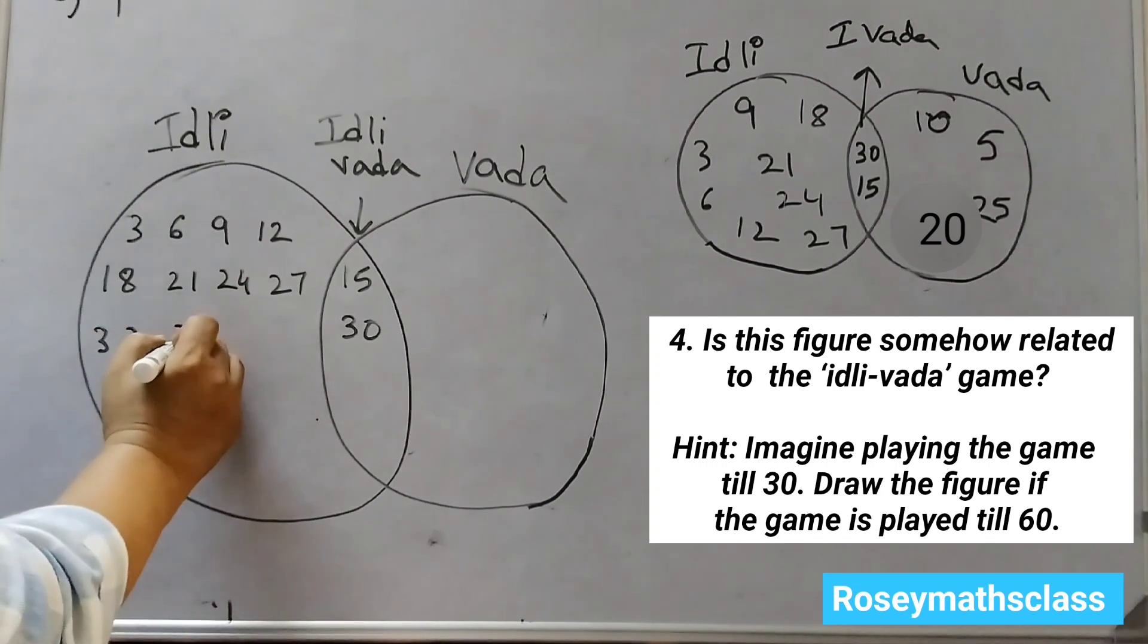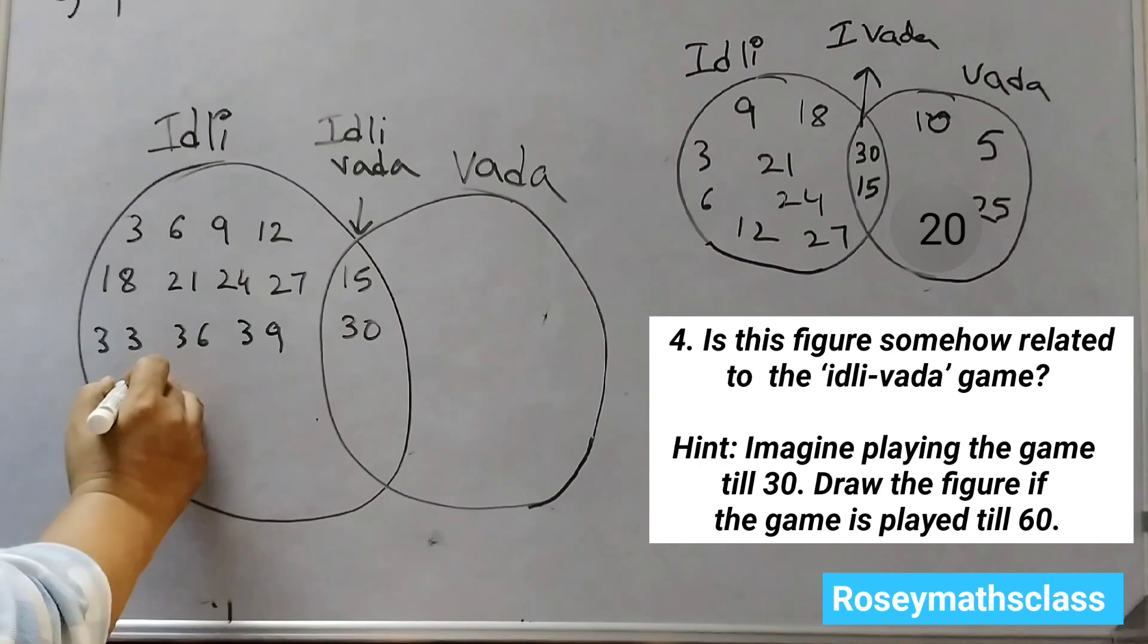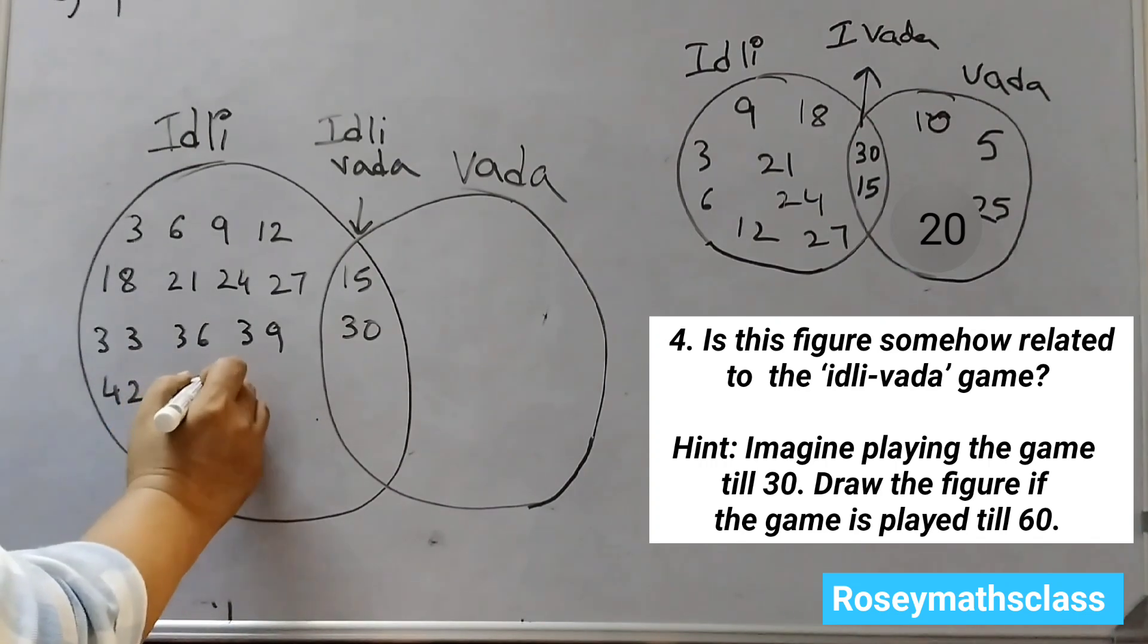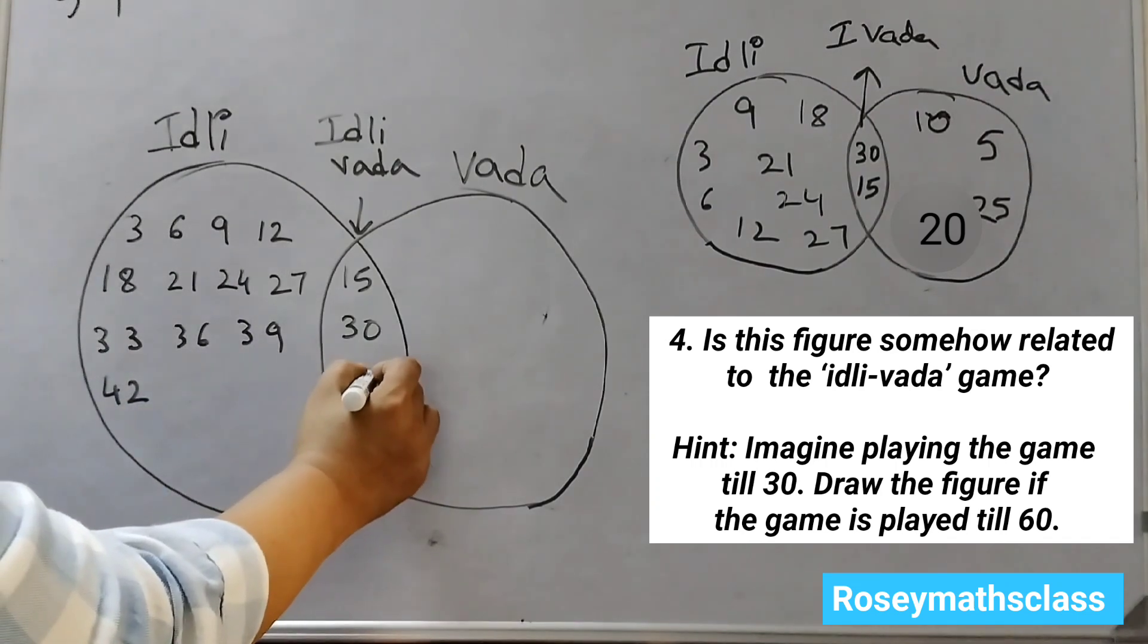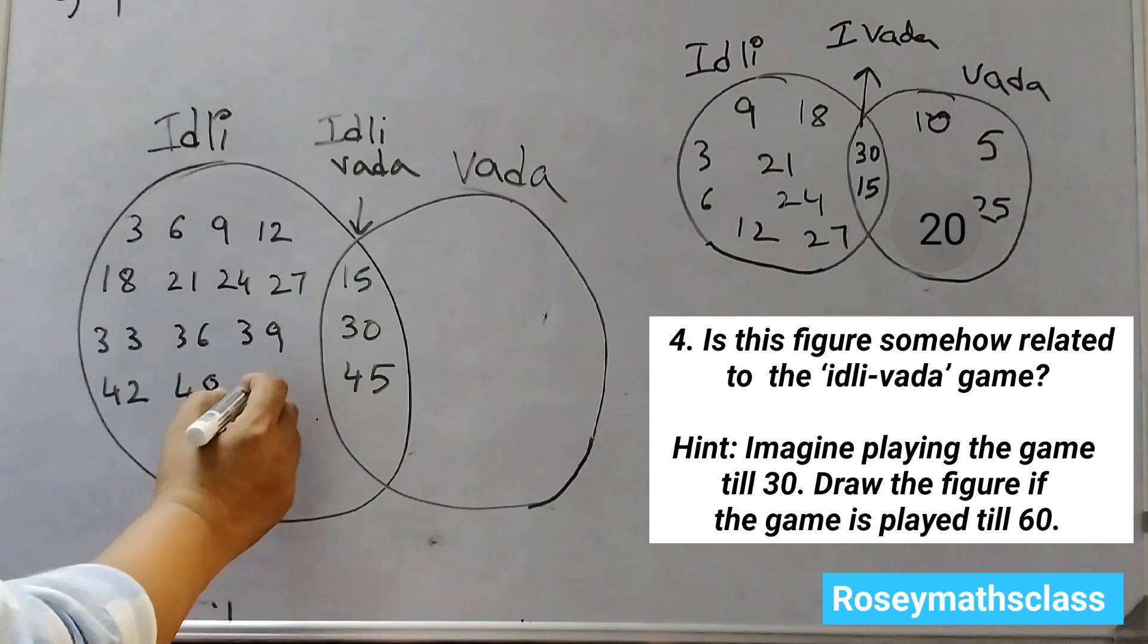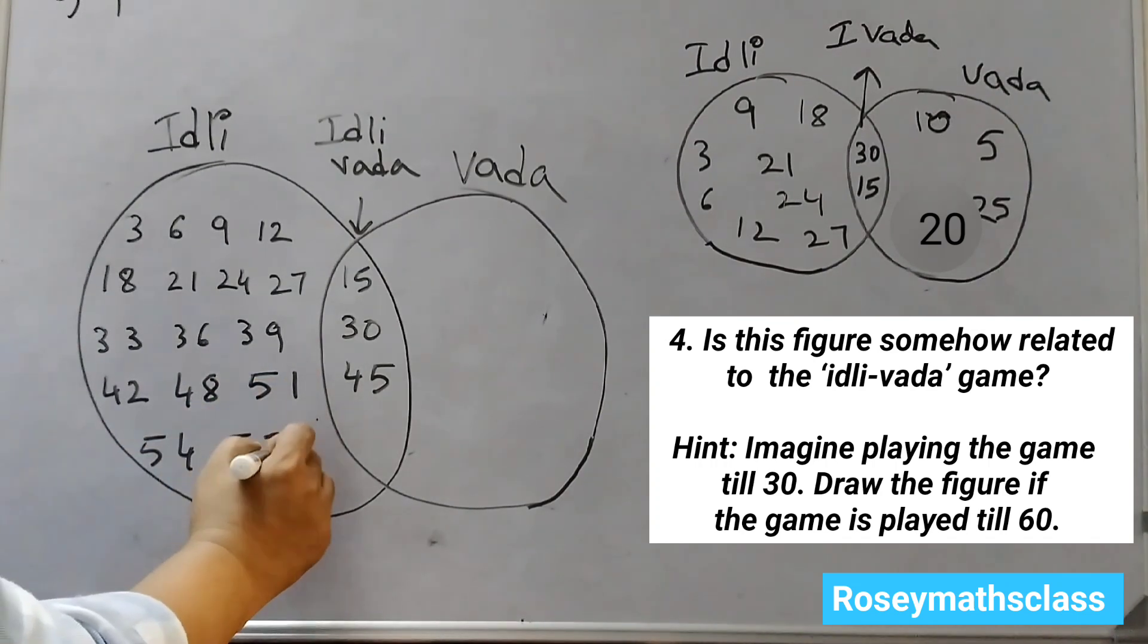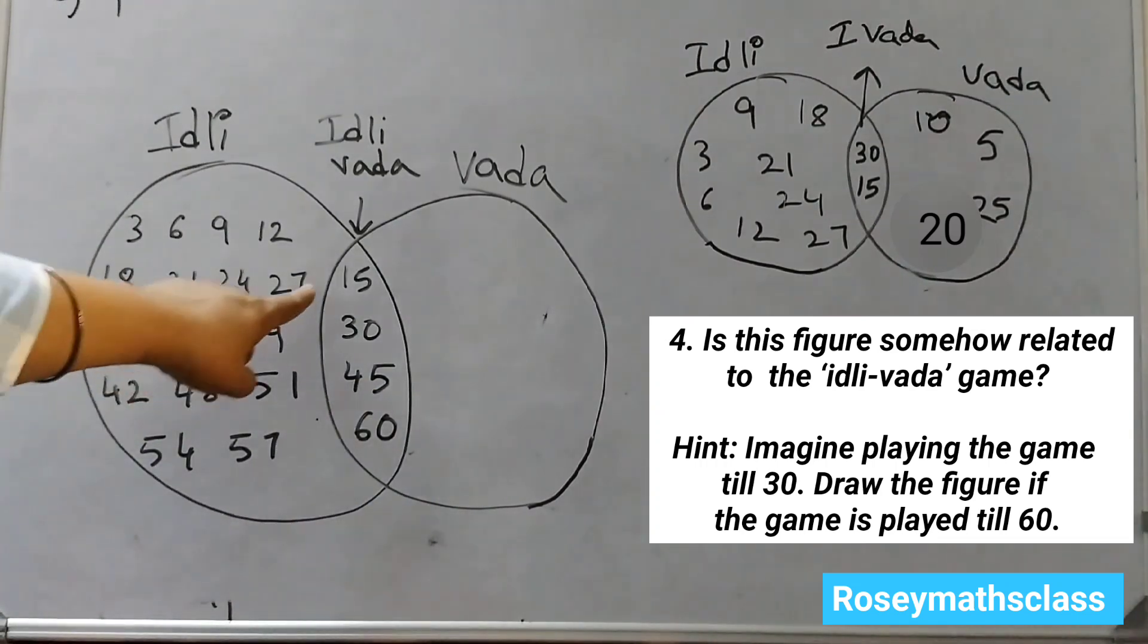33, 36, 39, 42. After 42, 45 would be here. 48, 51, 54, 57, 60. So I have written all the multiples of 3 here. The common multiples I have written here, and rest all the multiples I have written here.